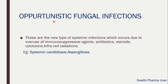In systemic mycosis there is one more category — a special or new type — called opportunistic fungal infection. This type of systemic fungal infection will occur due to overuse of immunosuppressive agents, antibiotics, steroids, cytotoxins, and infrared radiations. Immunosuppressive agents are used in cases of graft rejection to suppress or make the immune system deficient. Overuse of antibiotics, steroids, cytotoxins like anti-cancer drugs, and infrared radiations can all lead to opportunistic fungal infections.